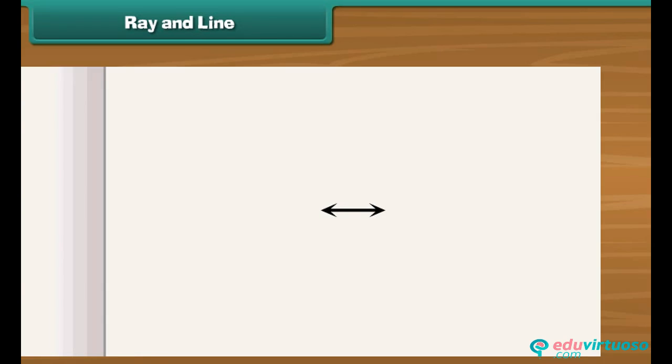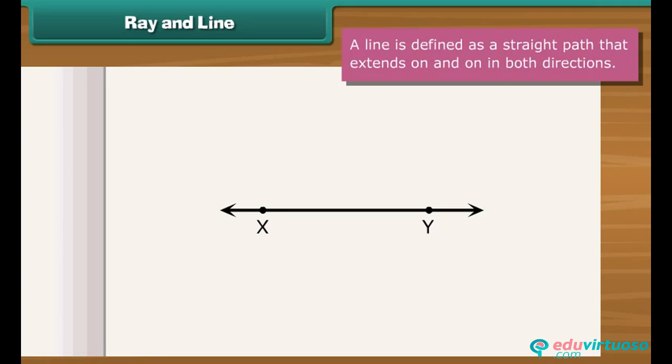What if a straight path extends on and on in both directions? This becomes a line. For example, line X, Y. Thus, a line is defined as a straight path that extends on and on in both the directions.